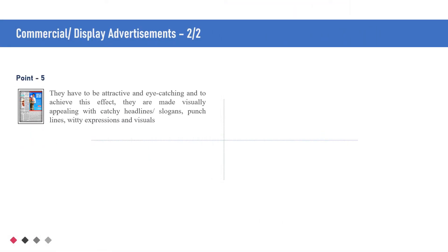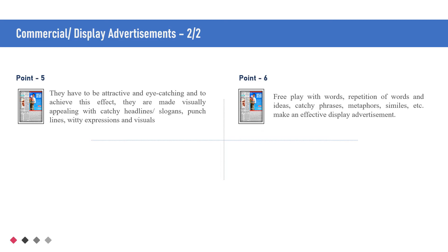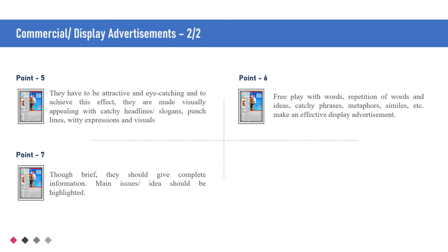They have to be attractive and eye-catching. To achieve this effect, they are made visually appealing with catchy headlines or slogans, punchlines, witty expressions and visuals. Free play with words, repetition of words and ideas, catchy phrases, metaphors, similes, etc., make an effective display advertisement. Though brief, they should give complete information.